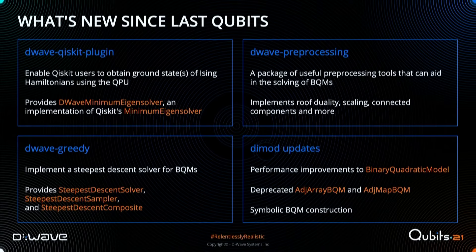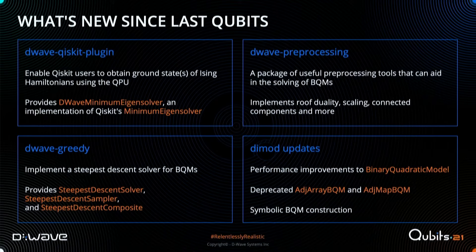We also have miscellaneous improvements all over Ocean, but the ones I want to highlight are improvements to our DIMOD library. Specifically, we've implemented performance improvements to the base binary quadratic model object in Ocean, giving it a C++ back-end to improve overall performance. With that came a deprecation of some previous C++ implemented BQMs — the edge array BQM and edge map BQM. The last big new feature I'll spend the remaining time on is our new symbolic binary quadratic model construction.